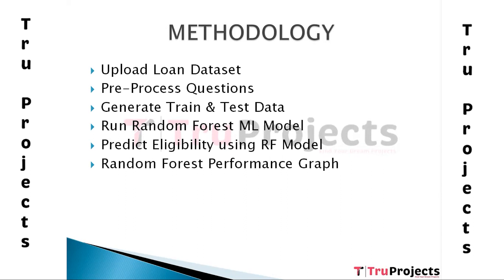Machine learning does not accept non-numerical values, so we convert all those values to numerical values by assigning IDs to them. For example, values like 'Male' will be replaced with 0 and 'Female' will be replaced with 1. The next module is 'Generate Train and Test.'